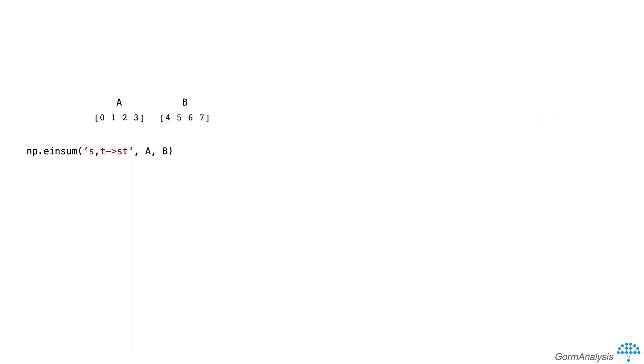How about this one? s,t->st. In this case, we get back a 4x4 array, and you could write the pseudocode for the process as: initialize output as a 4x4 array of zeros. For each s, for each t, output[s,t] += a[s] * b[t].